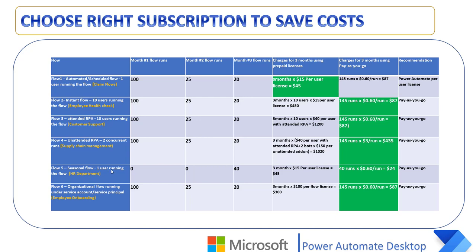Scenario five covers seasonal flows, such as an HR department where one user runs a flow. In month one and month two there are no runs, and in month three there are 40 runs. With the per user plan over three months: $45. With pay as you go: 40 runs × 60 cents = $24. Even for seasonal flows, we recommend pay as you go.